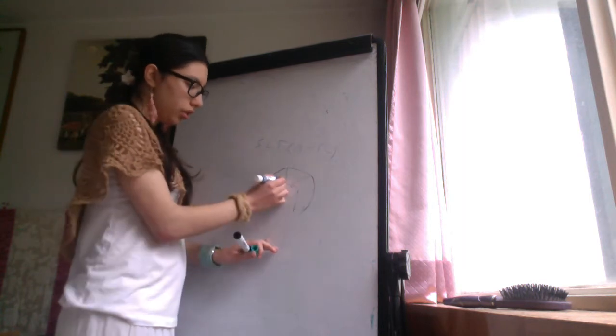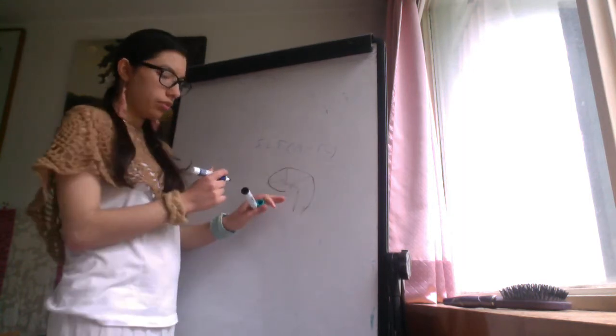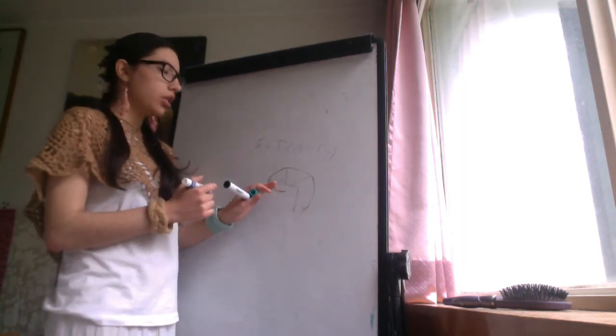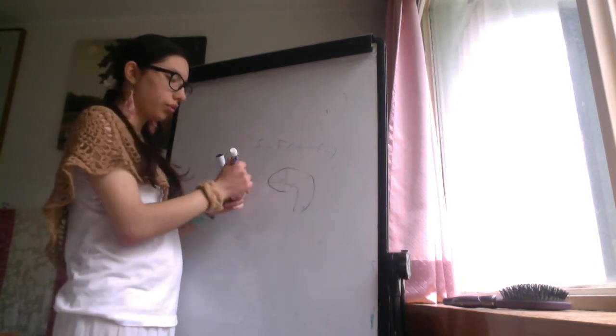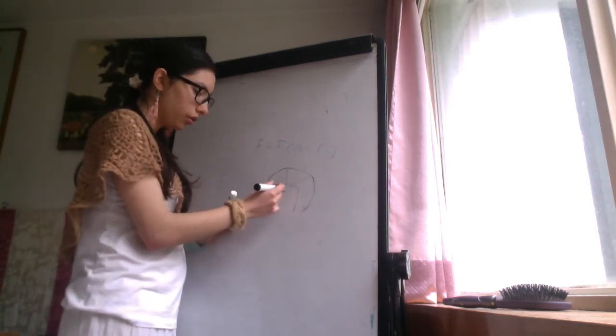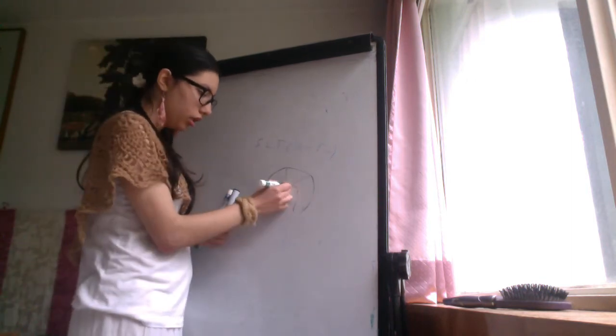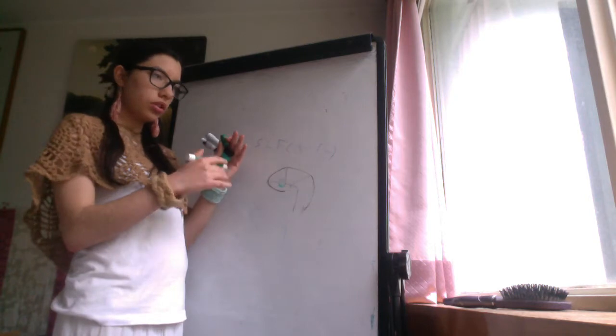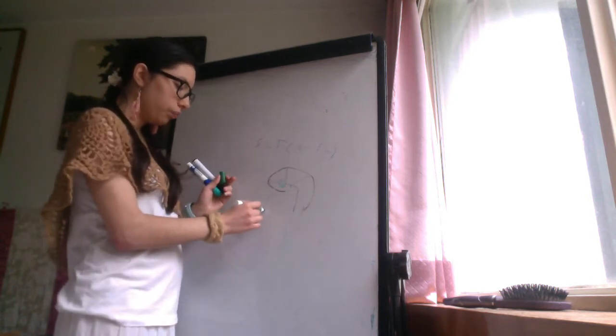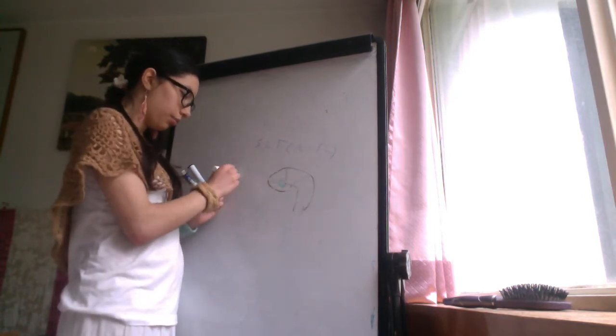The Broca's area is here on the inferior gyri of the frontal lobe, and Wernicke's area is in the superior temporal gyri. Here. But this is Broadman area 22, and Broca's area is Broadman area 42.